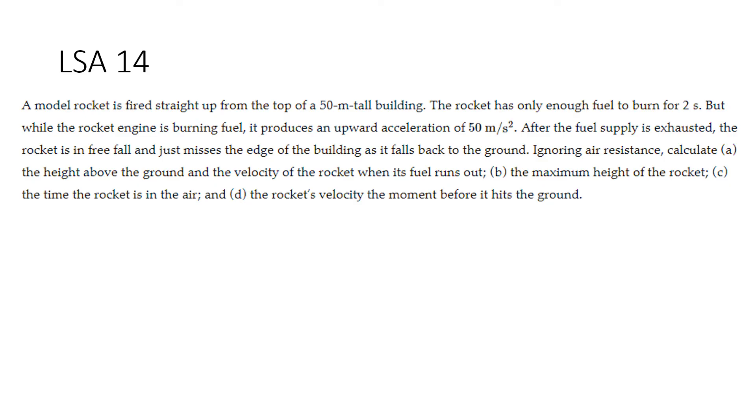And we have a low stakes assessment for you also to consider. A model rocket is fired straight up from the top of a 50 meter tall building. The rocket has only enough fuel to burn for two seconds. But while the rocket engine is burning fuel, it does produce an upward acceleration of 50 meters per second squared. After the fuel supply is exhausted, the rocket is in free fall and just misses the edge of the building as it falls back to the ground. Ignoring air resistance, calculate A, the height above the ground and the velocity of the rocket when it runs out of fuel, B, the maximum height of the rocket, C, the time the rocket is in the air before it hits the ground, and D, the rocket's velocity the moment before it hits the ground.